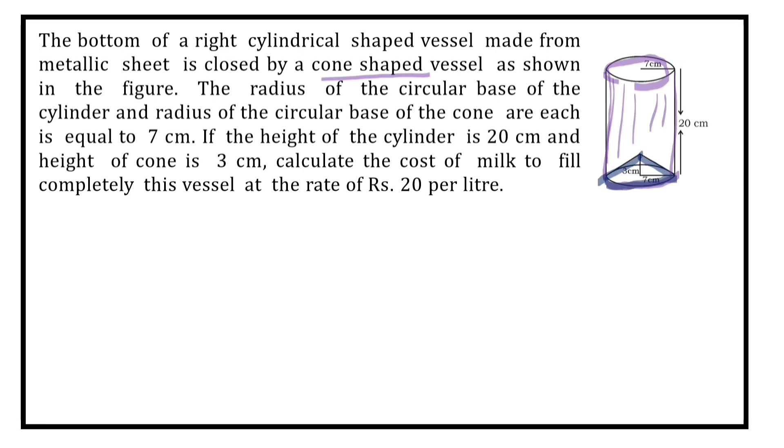The radius of circular base of the cylinder and radius of the circular base of cone are each equal to 7 cm. What is the radius of the cylinder? 7 cm. Here you can see. What is the radius of the cone shaped vessel? It is also 7 cm.